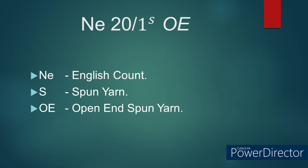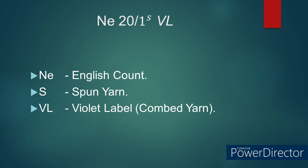Number 8: NE 20/1S VL. Here NE refers to English count. S refers to spun yarn. VL refers to violet label, meaning combed yarn — that is, the yarn has undergone the combing preparatory process during its yarn manufacturing.